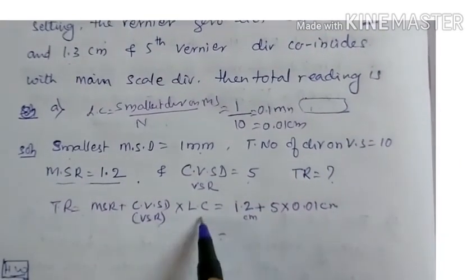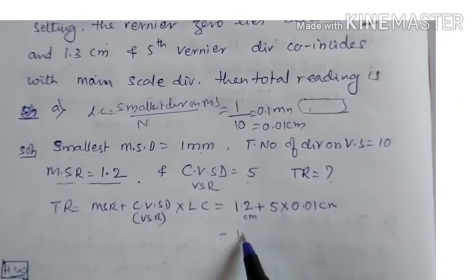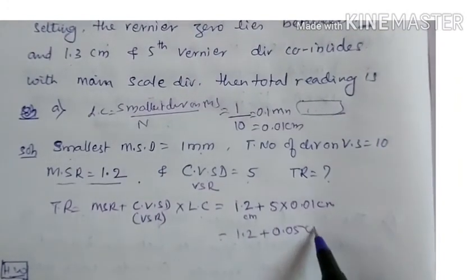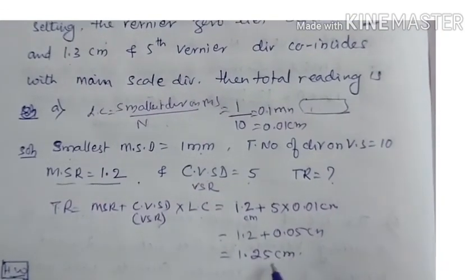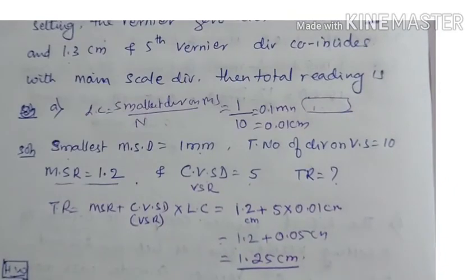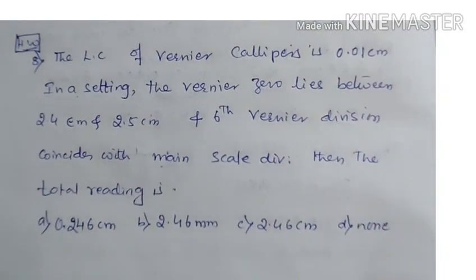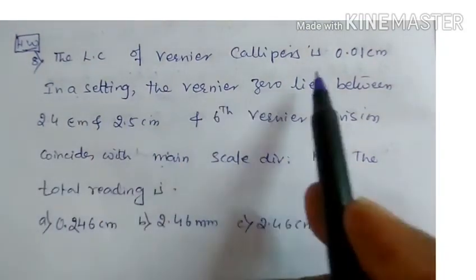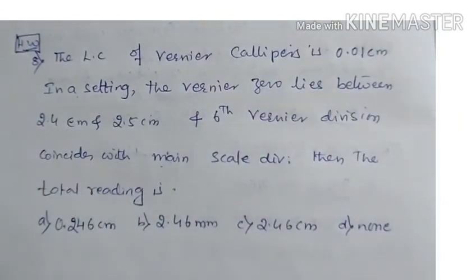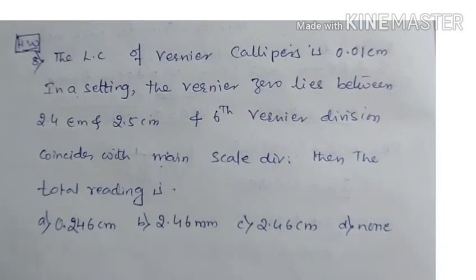So total reading is 1.2 plus 5 into LC, where LC is 0.01 centimeters. That gives 1.2 plus 0.05, which equals 1.25 centimeters. Next class we will go to screw gauge problems, and then parallelogram law, triangle law, and Lamy's theorem problems. This is an important chapter. God bless you, see you in the next class.